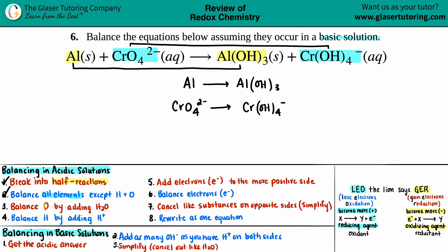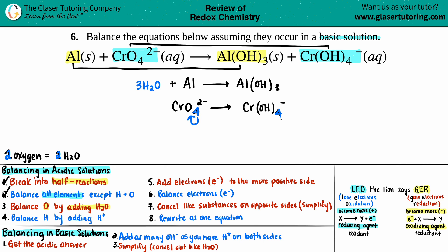Step three: balance oxygen by adding H₂O. We always balance oxygen before hydrogen, and we do it by adding H₂O. For the first half-reaction, there are no oxygens on the left but three on the right, so add 3H₂O to the left. For the second half-reaction, there are four oxygens on each side, so that's already balanced.